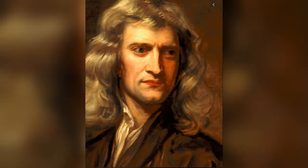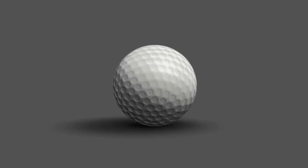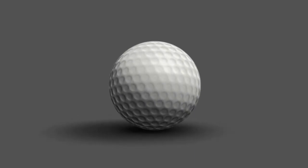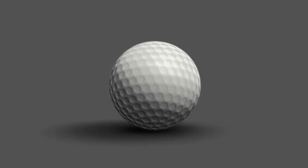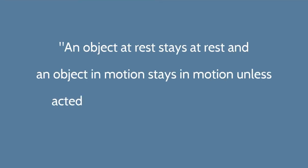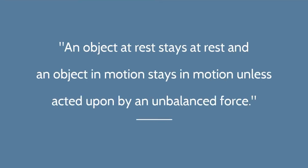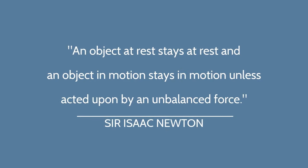Cue Sir Isaac Newton. Newton tested and proved Galileo's theory. He also thought that the ball should roll on forever, but it stops due to friction. Newton then came up with his first law of motion, or the law of inertia, which states: an object at rest stays at rest, and an object in motion stays in motion unless acted upon by an unbalanced force.